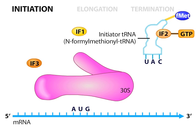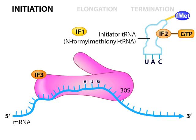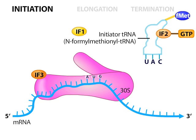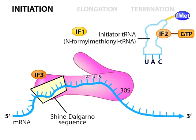IF3 readily binds to the small ribosomal subunit, and its presence blocks the large and small subunits from prematurely associating. IF3 facilitates the binding of the mRNA to the small subunit of the ribosome. The binding occurs just four to eight bases upstream of the AUG start, where a consensus sequence called the Shine-Dalgarno sequence in the mRNA anneals near the end of the 16S ribosomal RNA in the small ribosomal subunit.